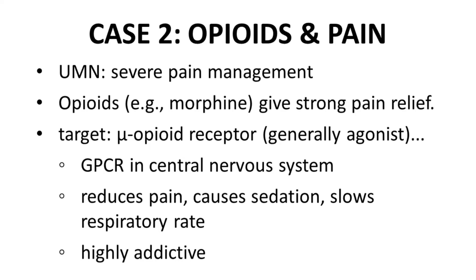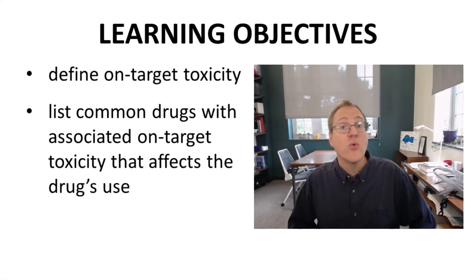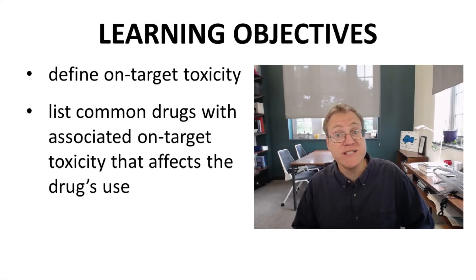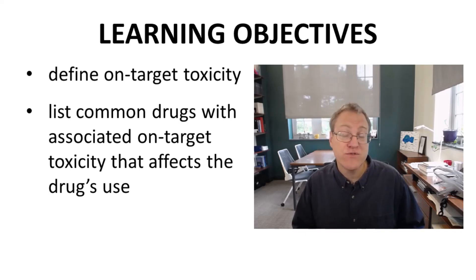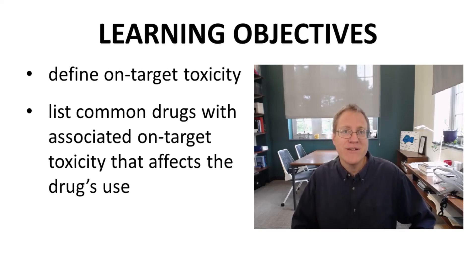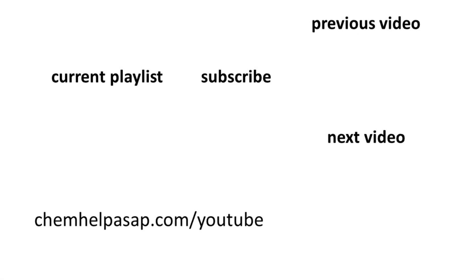Opioids are still used for severe pain management, but their shortcomings mean the drugs must be prescribed with care. We have defined on-target toxicity and provided two examples — steroids for arthritis pain management and opioids for severe pain — of drugs with problematic on-target toxicity. I hope you now have a better understanding of the complexities of on-target toxicity. If you have any questions, they are always welcome in the comments section of the video. Take care.